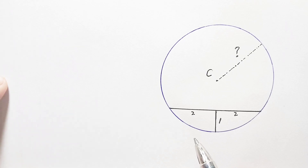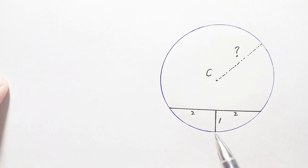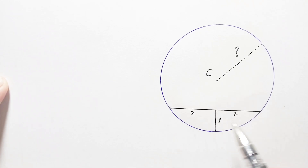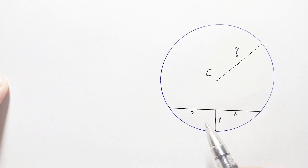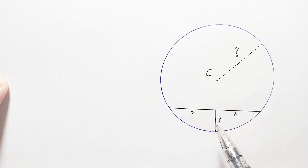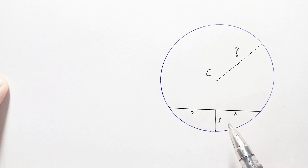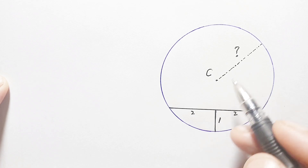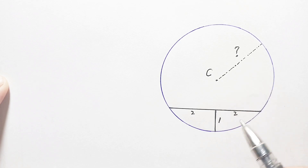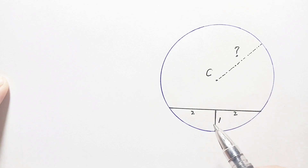Hello everyone, welcome. Today we have a very interesting geometry math problem. We are given a circle with a chord whose length is four units, and a perpendicular bisector to the chord whose length is one unit, which divides the chord into two equal segments. We have to find the radius of this circle.